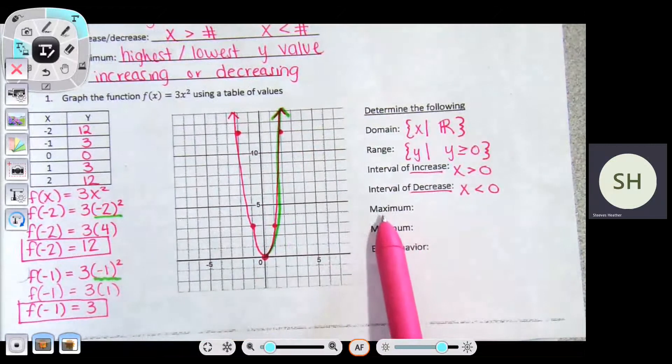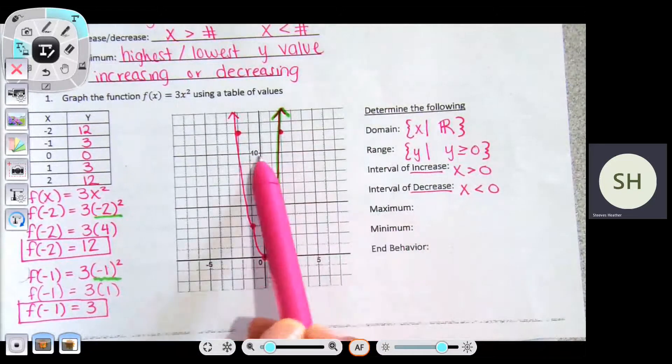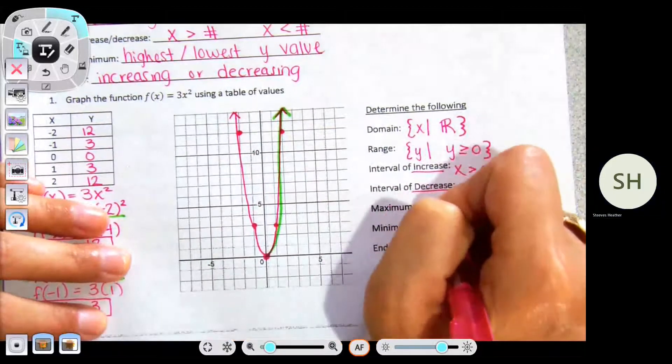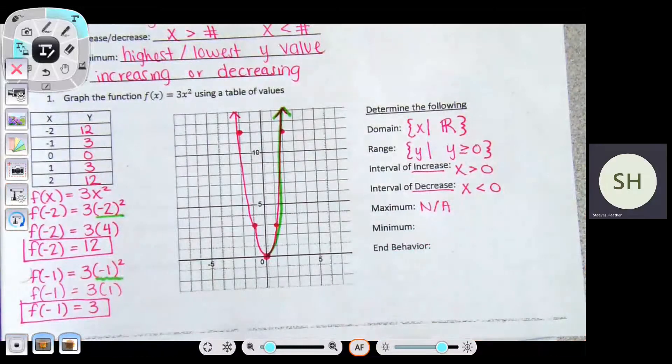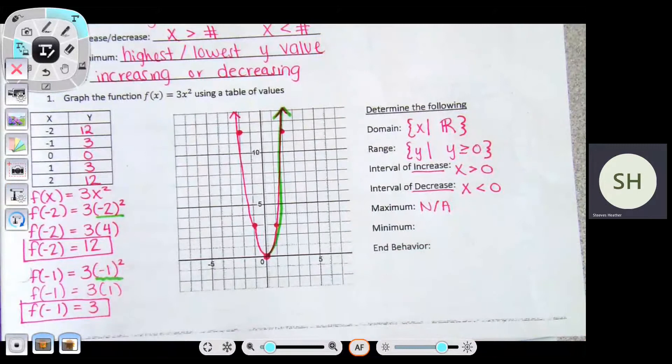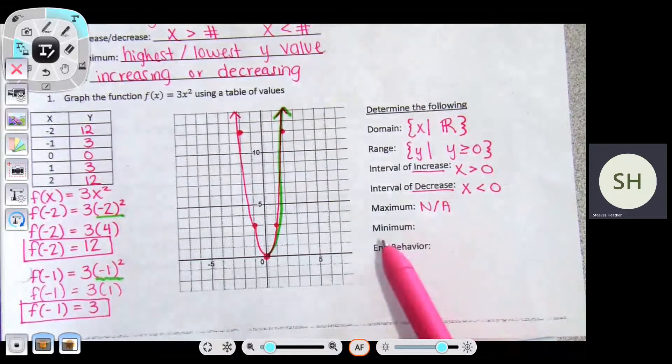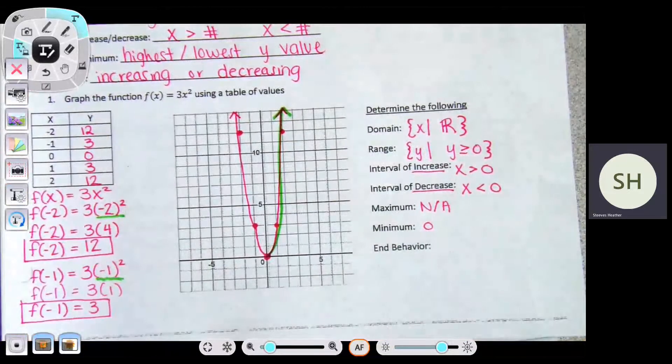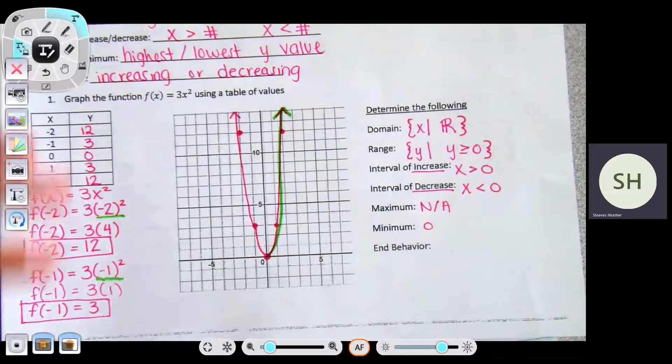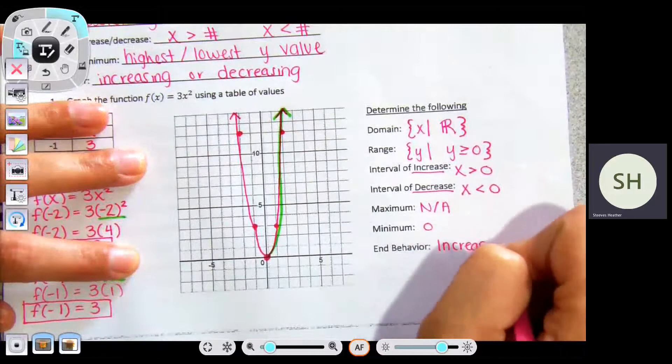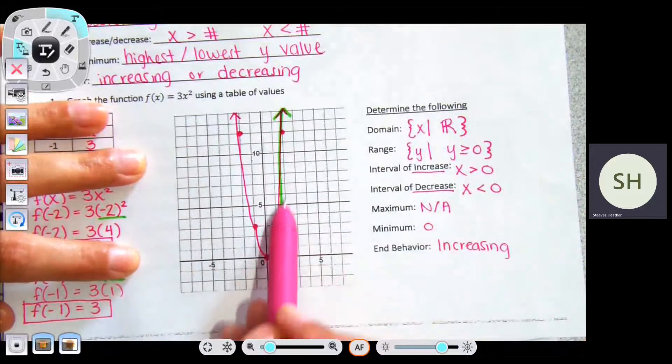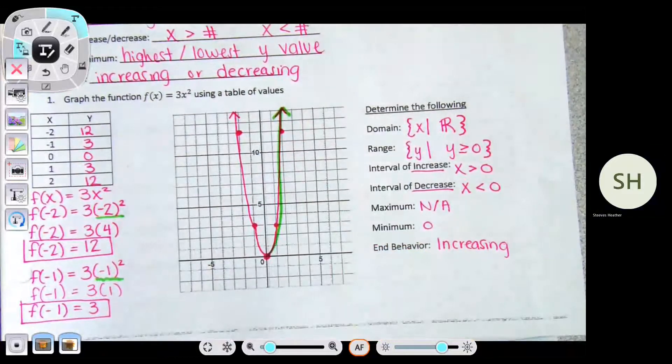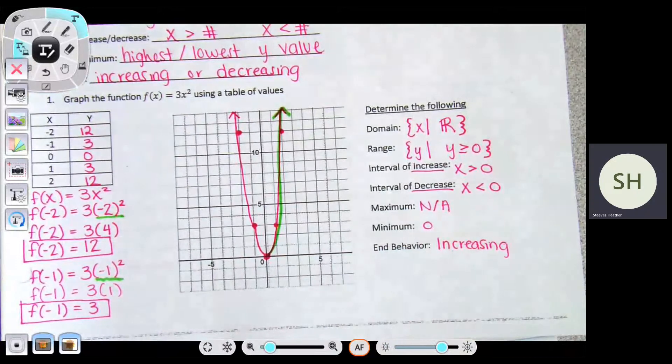Does this graph have a maximum number it will ever reach? No. Technically right here it's like 14, but could I zoom out? Yes. So this is NA, it doesn't apply either. Generally, you're either gonna have a maximum or minimum. Once we get later on in the year, you can have both because then we're going to do like actual squiggles. What is the minimum value? Zero. And end behavior talks about it overall. Is this graph increasing or decreasing? Increasing.